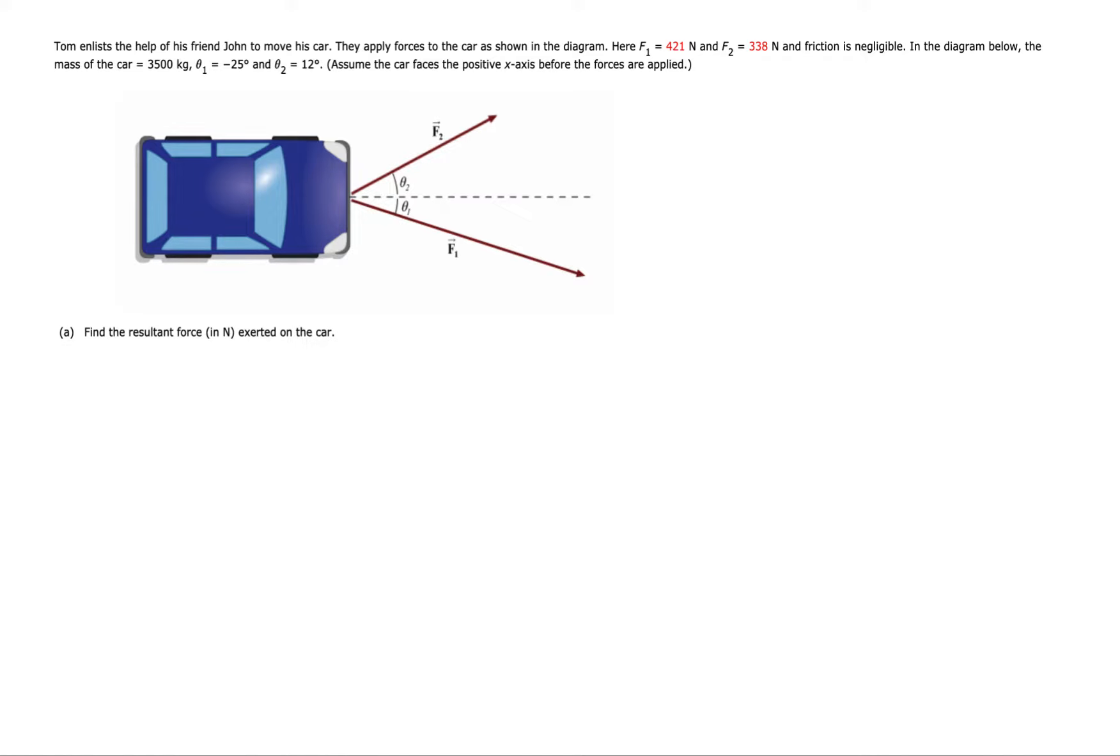Tom enlists the help of his friend to move his car. They're gonna move the car by having one friend on one side and another friend on the other side, and they're gonna push on the car in those directions of those forces where F1 is 421 Newtons and F2 is 338 Newtons.